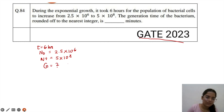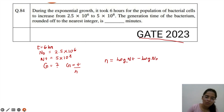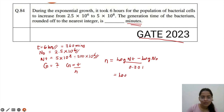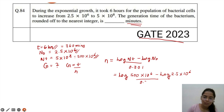We need to find the generation time g = t / n, and we first find n = (log Nt − log N0) / 0.301. The answer is asked in minutes, but the time is given in hours, so we convert: 6 hours = 360 minutes. We rewrite 5 × 10⁸ as 500 × 10⁶ to get a common power of 10⁶. Substituting: n = (log(500 × 10⁶) − log(2.5 × 10⁶)) / 0.301. The 10⁶ terms cancel.